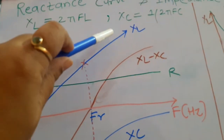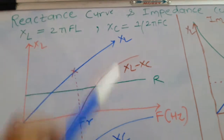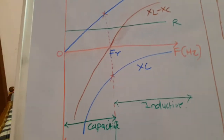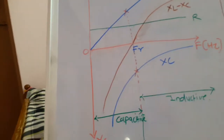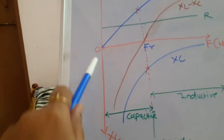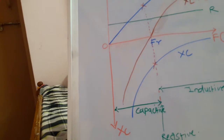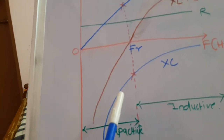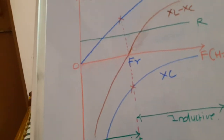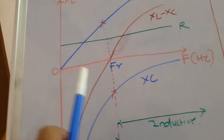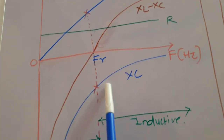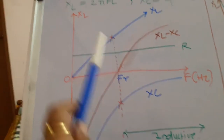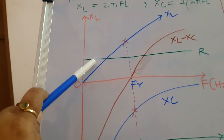Capacitive reactance XC = 1/(2πfC) has an indirect relationship with frequency. When frequency equals zero, capacitive reactance is infinite in the negative direction. For low values of frequency, capacitive reactance is large but in the negative infinite direction. As frequency increases, capacitive reactance reduces and the curve comes near the origin in the negative direction, giving a parabola or exponential shape.